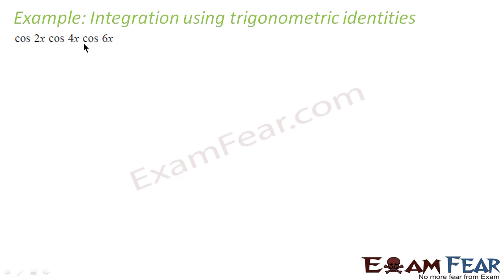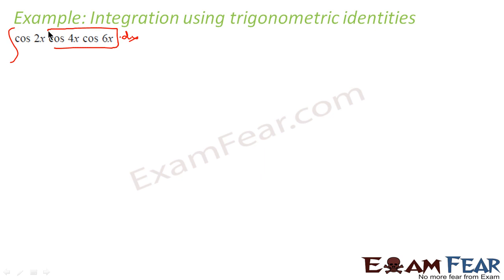Using substitution won't help here, because if you take cos 4x you get sine x sine 6x dx, which is not there. So we will also use trigonometric formulas here. Let's take these two parts.